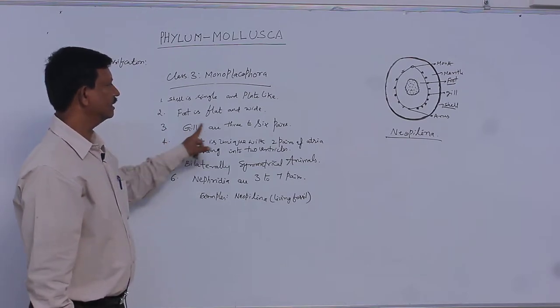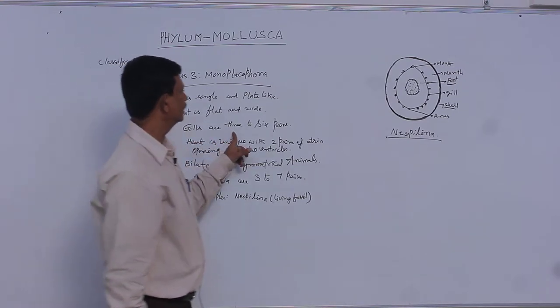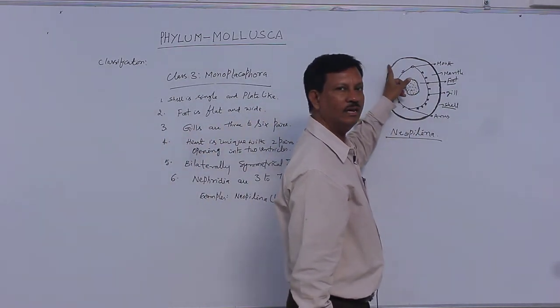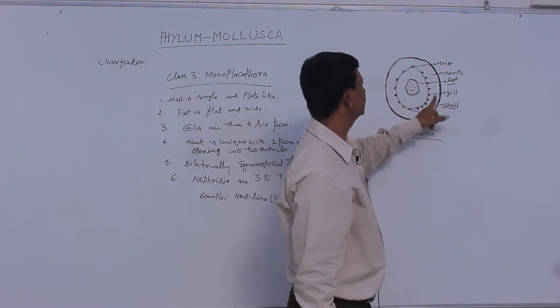Gills: there are three to six pairs of gills present here. You can see these are the gills. It is also found in the water and helps in respiration.